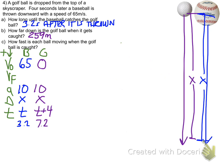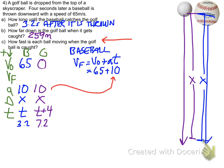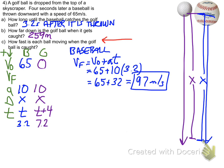Then last we want to know how fast each ball is moving. For the baseball we have V final equals V zero plus AT. 65 is V zero. 10 is our acceleration and our time of 3.2 seconds. And we calculate all that and we get 97 meters per second.